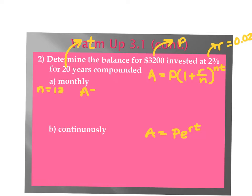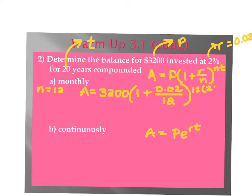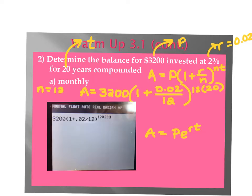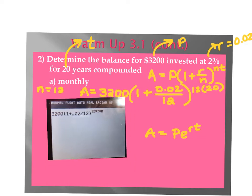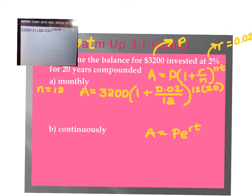So A will equal P, which is 3,200, times 1 plus R, which is 0.02, over N, which is 12, raised to the power of N, which is 12, times T, which is 20. You can type that all into your calculator. When you type that in, it should look like this: 3,200 times parentheses 1 plus 0.02 divided by 12, close parentheses, raised to the 12 times 20. Hit enter and you get your balance, which is $4,772.25.